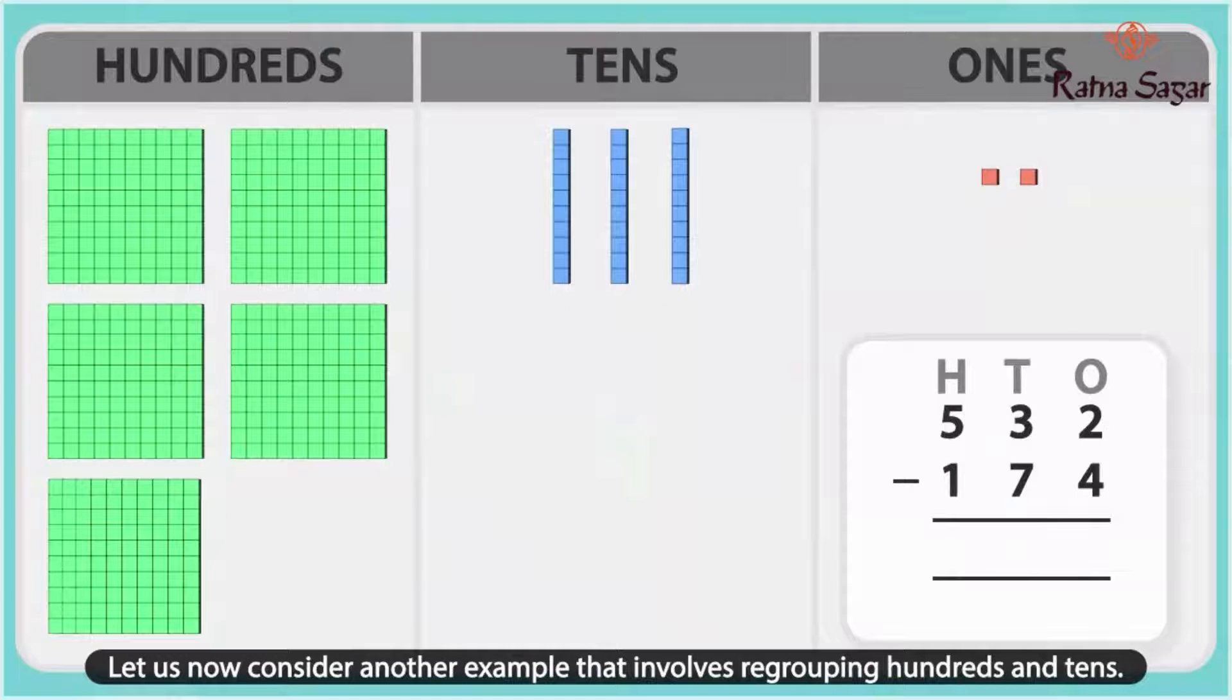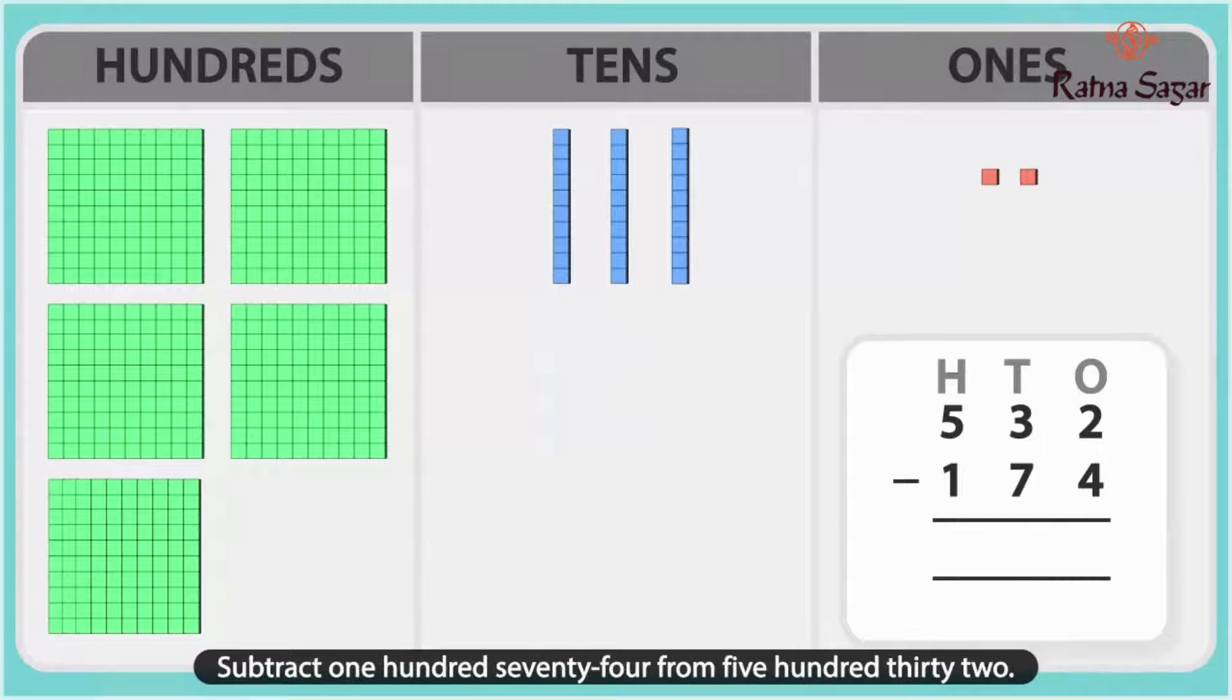Let us now consider another example that involves regrouping hundreds and tens. Subtract 174 from 532.